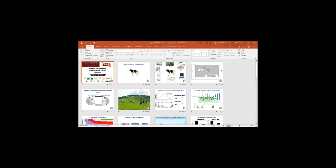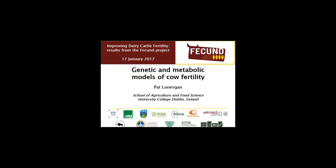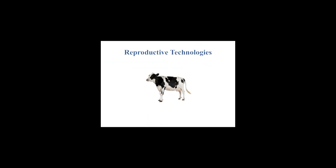Good morning everybody. I would like to apologise for not being with you live this morning as I am currently attending a conference in the US. I am going to give you a bit of background to the FECUND project and describe the two models of cow fertility used in the project: a genetic and a metabolic model. Many reproductive technologies have been developed and applied to dairy cattle. The earliest of these, artificial insemination, has been around since the 1950s and has played a central role in genetic improvement by allowing high genetic merit bulls to sire hundreds of thousands of offspring in their lifetime.